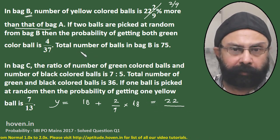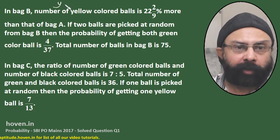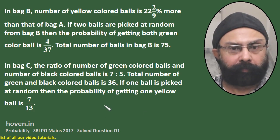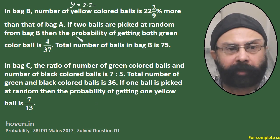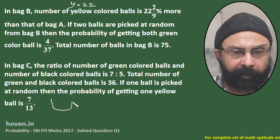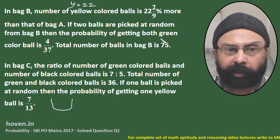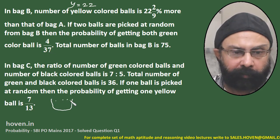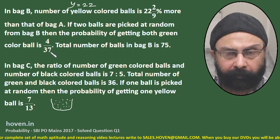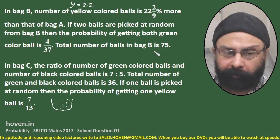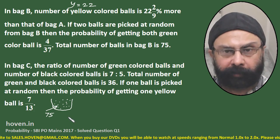If two balls are picked at random from bag B, the probability of getting both green is 4/37. There are some balls in bag B, and the total number of balls in bag B is 75. So we have 75 balls in this bag, and the probability of picking two green balls is given as 4/37.